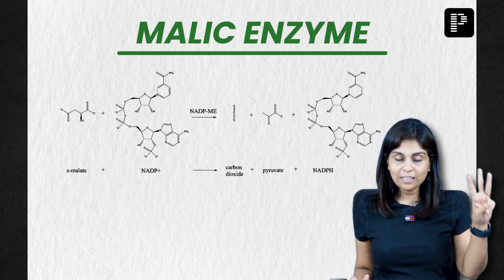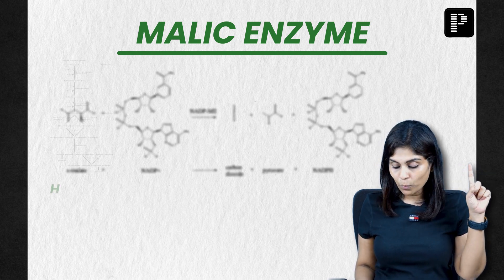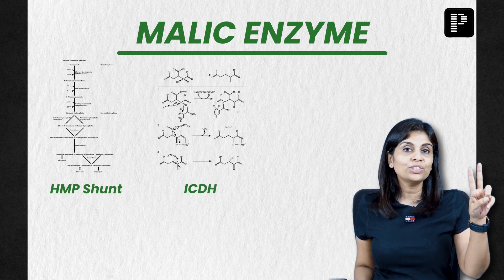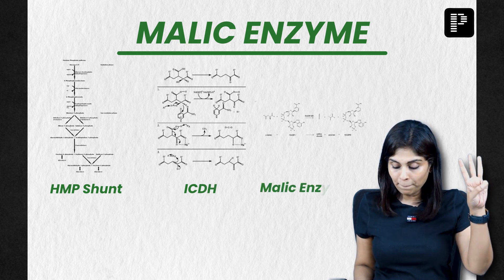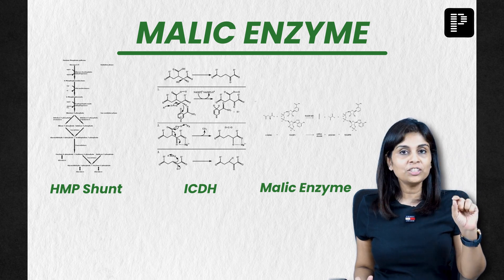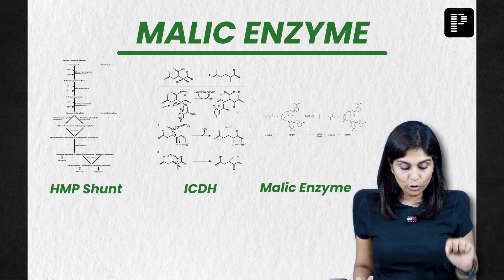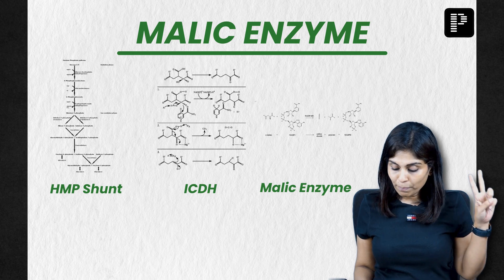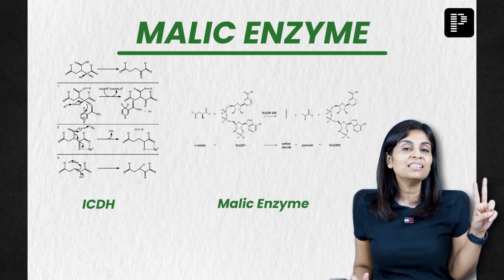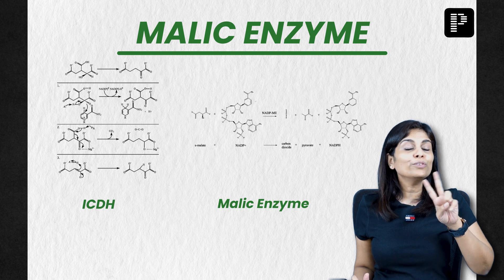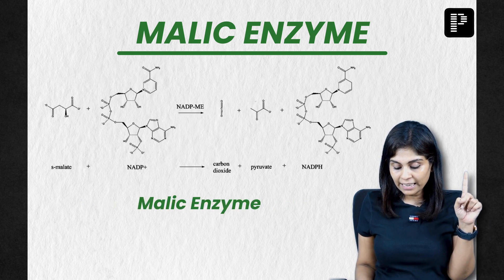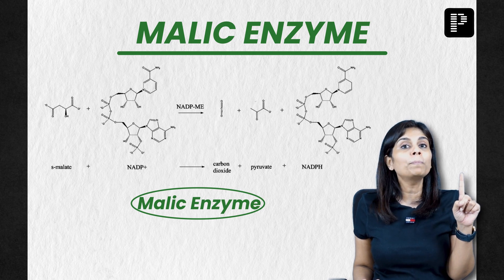There are three sources of NADPH. Number one is the HMP pathway. Number two is isocitrate dehydrogenase — a cytoplasmic enzyme — and number three is malic enzyme. Out of these three, we know the HMP pathway has to be excluded because of clue three. So you are left with two choices: isocitrate dehydrogenase and malic enzyme. Out of these two, the most important anaplerotic reaction is malic enzyme, which converts malate to pyruvate.